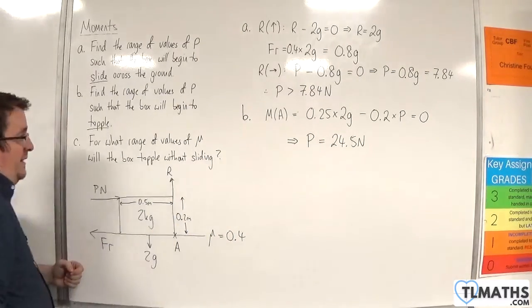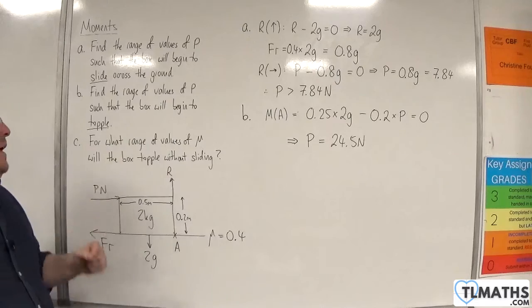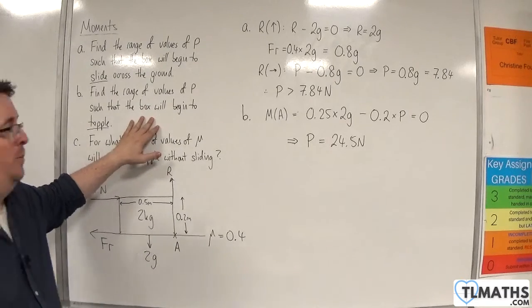If p is greater than 24.5 newtons, then it'll begin to topple.